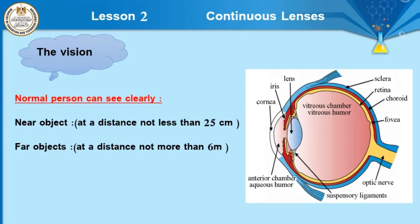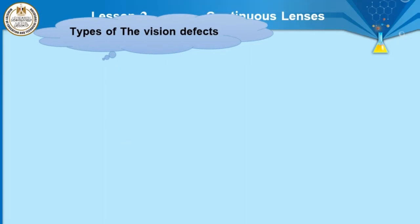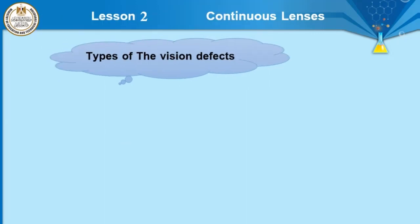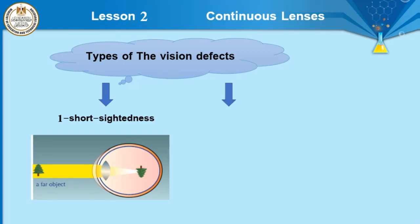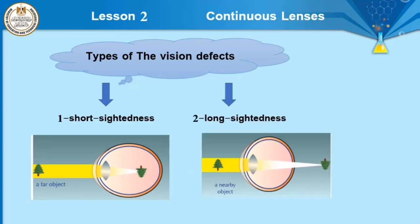In the normal case, the image is formed on the retina of the eye. When an object cannot form its image on the retina, this causes vision defects. Vision defects can be classified into two types: short sightedness and long sightedness. In the picture, the image appears before the retina of the eye — this person can see near objects clearly, while far objects cannot be seen clearly and appear distorted.